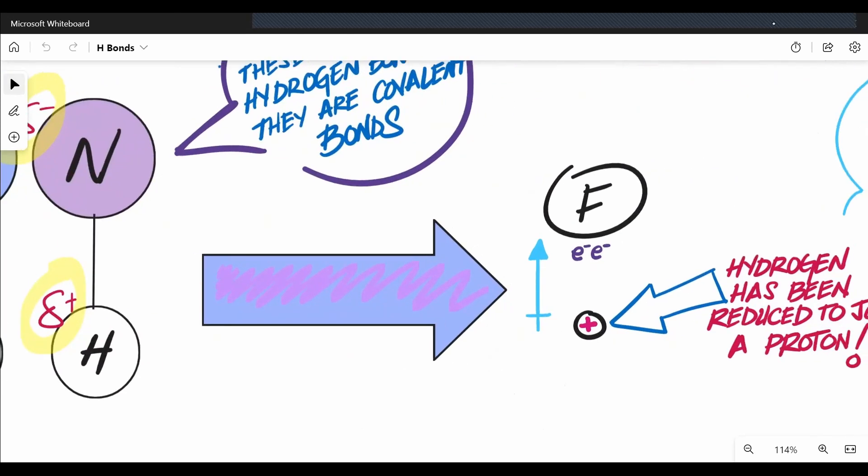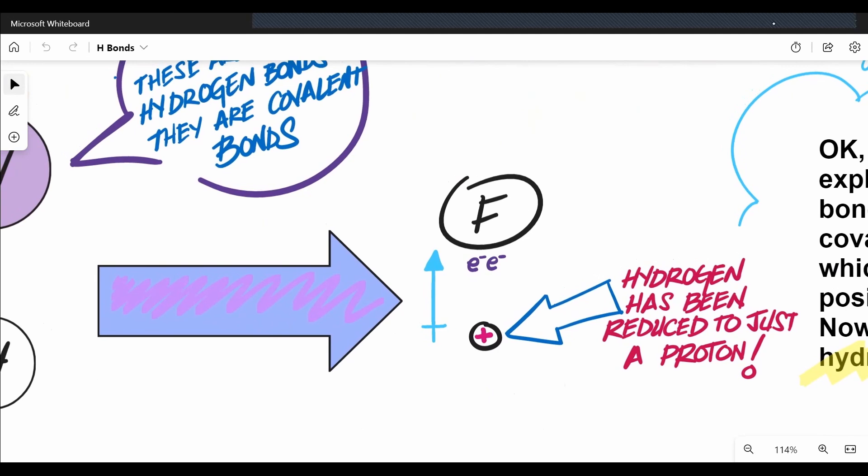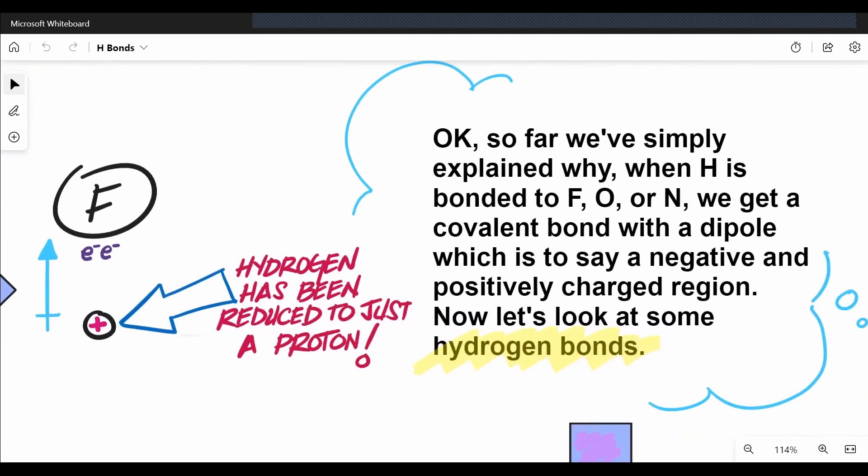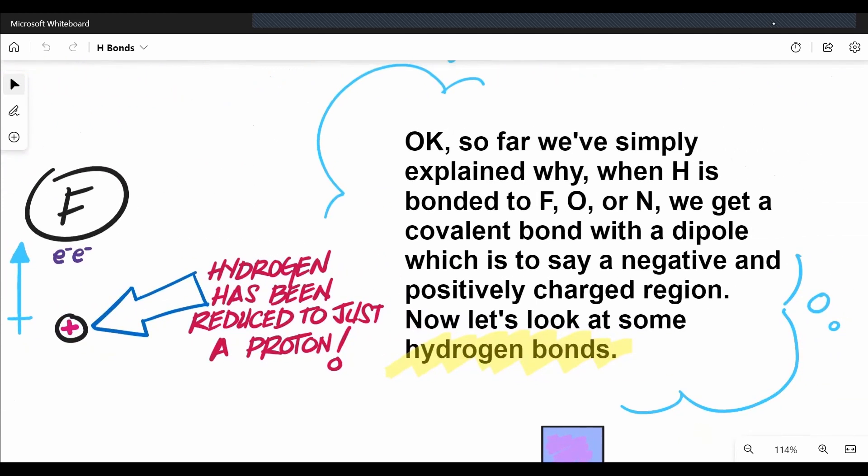We haven't gotten to hydrogen bonds yet, but these dipoles are essential. Now, why does the dipole happen? Well, remember if hydrogen is just an electron and a proton, and if one of these really electronegative atoms pulls those electrons away toward itself, that reveals hydrogen to just be a proton. So you just have this proton hanging out there. And that's why it has a positive charge on that end of the bond. And of course, the electrons being closer to fluorine is why it has a negative charge on that end of the bond. So far, we've simply explained why when hydrogen is bonded to these three key elements, either F or O or N, we get a covalent bond with a dipole, a region of negative and positive charge. Now I'm sure you're ready to look at hydrogen bonds, so let's do it.